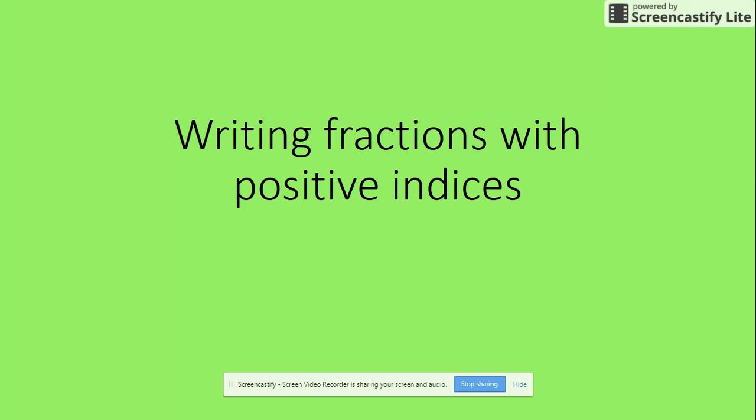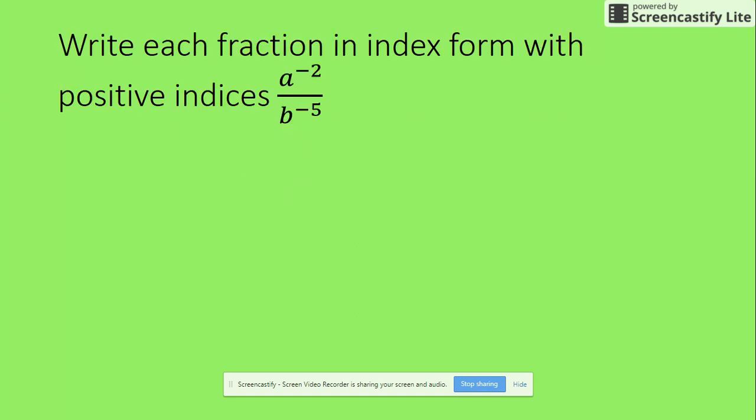Okay, so we're writing fractions with positive indices. You get a question like this - you've got A with a negative 2 index and B with a negative 5 index. So, this is the rule.